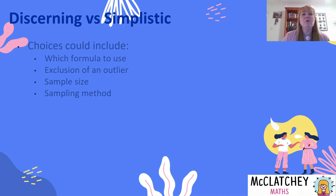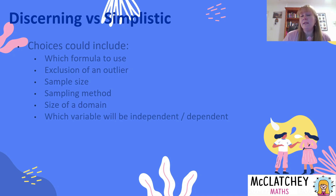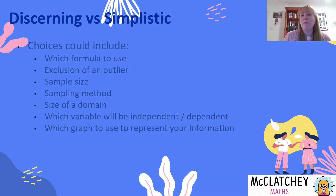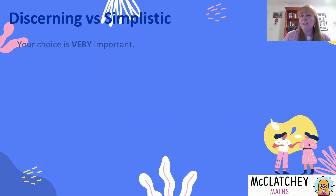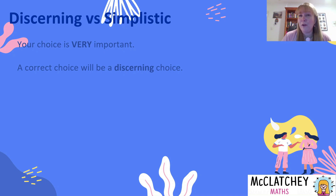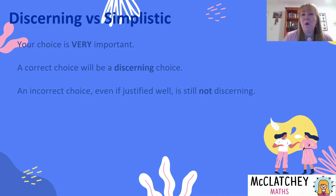The method you've chosen for your sample, the size of a domain you decide to explore when graphing, which variable you decide is independent or dependent — these are choices you're making, and they may or may not be discerning. Which type of graph you use to represent your information is also very important. There are right choices and wrong choices. If you make a correct choice, that's a discerning choice — a wise choice. If you make the wrong choice, even if you do a really good job explaining why, it's not a discerning choice. You won't hurt on communication, but you will hurt on solve.